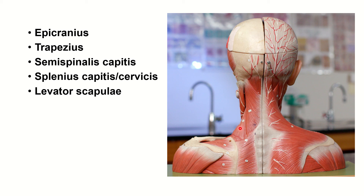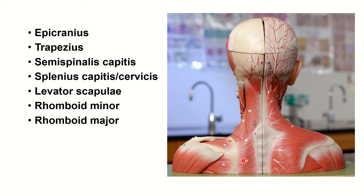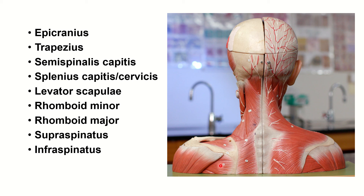Levator scapulae, rhomboid minor, and rhomboid major are all behind or deeper than the trapezius muscle. Supraspinatus: this bone is the scapula, this is the spine of the scapula, this is the acromion, this is the clavicle — so this is the supraspinous fossa, and this is the supraspinatus muscle. This one is the infraspinatus muscle. Deltoid is also visible from anterior, lateral, and posterior views.